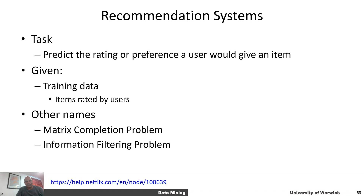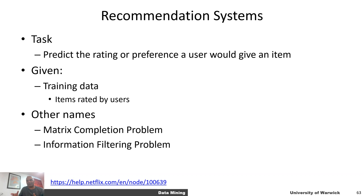Today we are going to talk about recommendation systems, which form the backbone of Netflix, Amazon, and a bunch of other large systems we typically use. The machine learning problem in these systems is that we want to predict the rating or preference a user would give a certain item — whether I would like one type of laptop over another, or one type of apple over another.